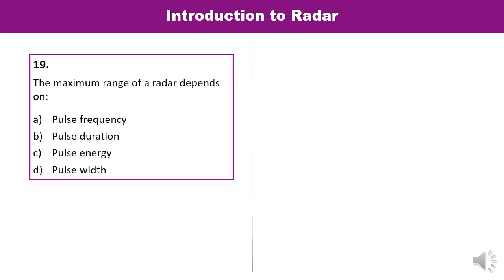Question 19: The maximum range of radar depends on what? Options: pulse frequency, duration, energy, or width. The maximum range of radar depends upon the pulse energy. C is the correct answer.